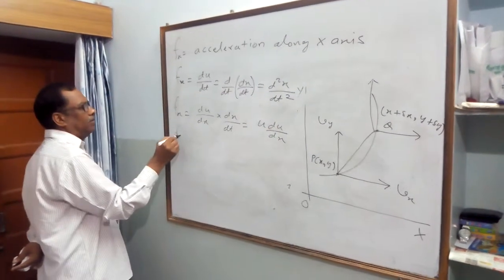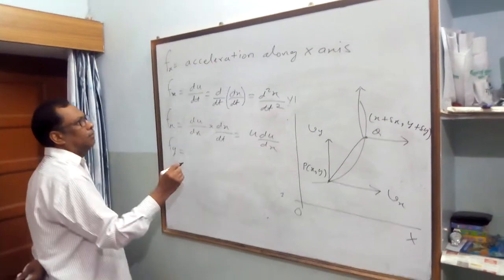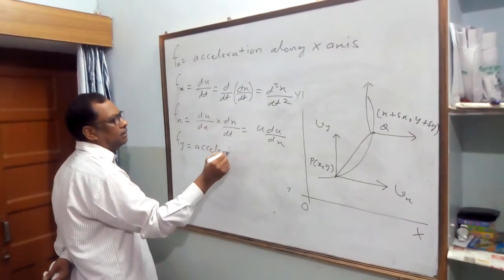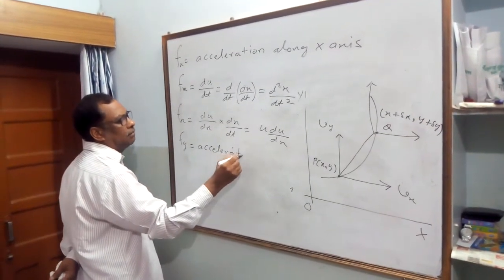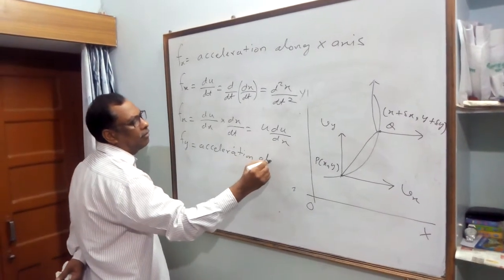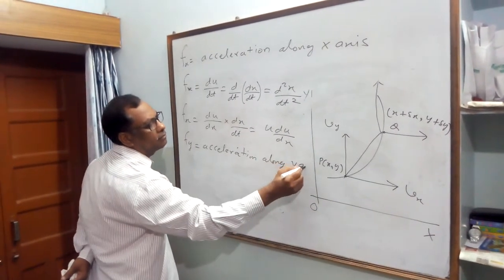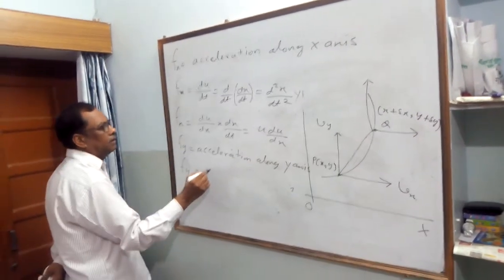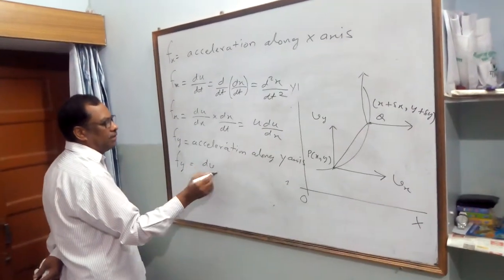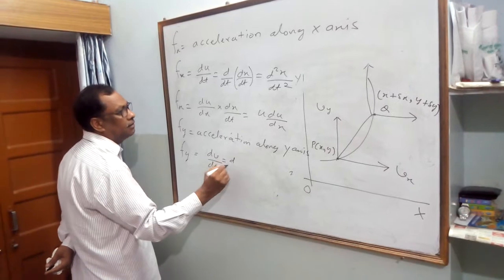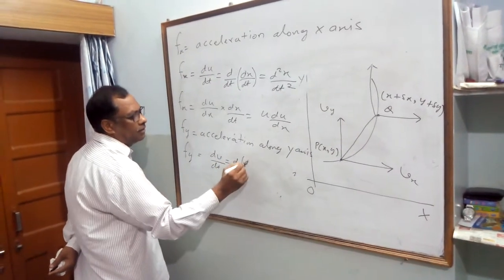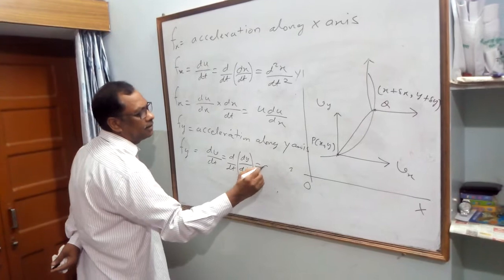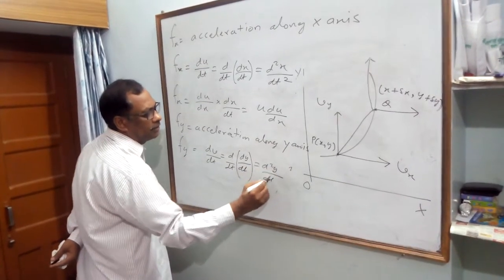Fy is acceleration along the Y-axis, defined as dv/dt, that is d/dt of dy/dt, which equals d²y/dt².